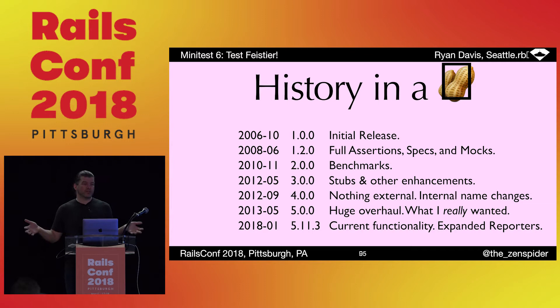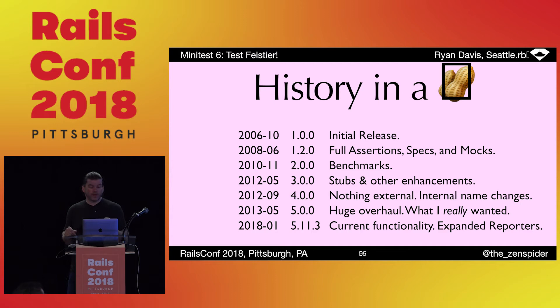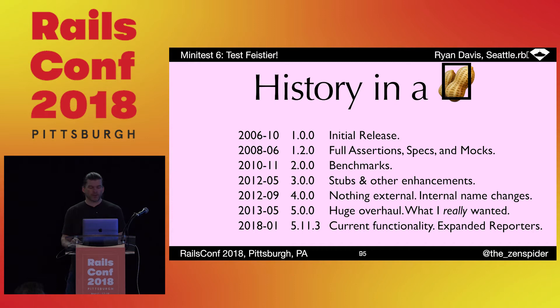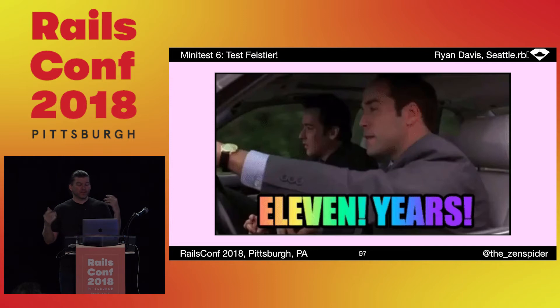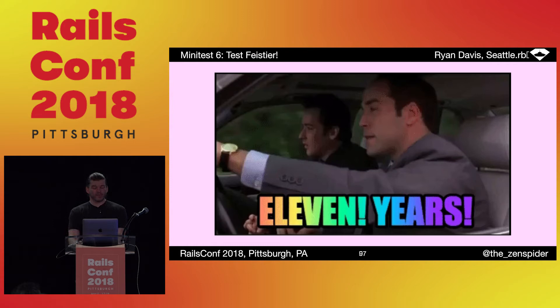So here's the history in a nutshell. Version 1 came around in 2006. 1.2 was all the assertions I didn't use. Then specs and mocks came in 2008. 2010 was benchmarks — yada, yada, yada. Version 5 came along in 2013, which is really where we're at now. In February I released the latest version, 5.11.3. The only real difference between that and 5.0 is that I've expanded the reporters a bit. Minitest 5 has lasted for five years and changed very little. It's API stable. And Minitest has existed for 11 years.